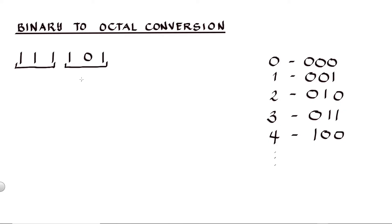So back to our example, 1, 0, 1 is our first group. And 1, 1, 1 is our second group.